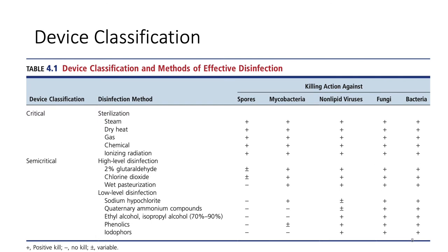Let's now take a look at device classification. An object's level of disinfection may depend on its use. Critical objects, which are materials that invade sterile tissues, should be sterilized at all times. Then you have semi-critical materials, which may require high-level disinfection. There are also non-critical materials, which may only need intermediate-level to low-level disinfection.